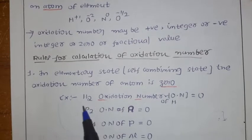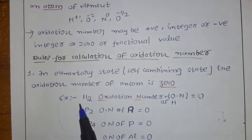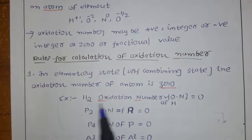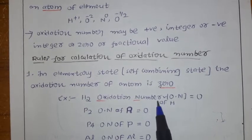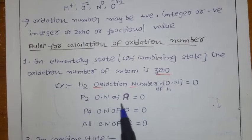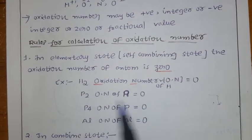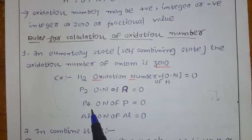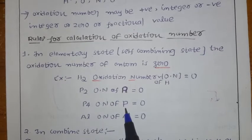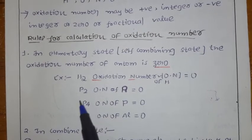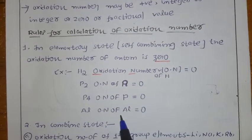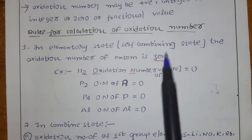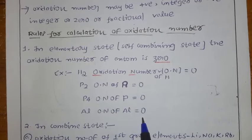Here we have H2: hydrogen atoms combine to give H2, which is a self-combining state. The oxidation number of hydrogen in H2 is 0. For P2, oxidation number of phosphorus is 0. For P4, the oxidation number of phosphorus is also 0, because we have similar phosphorus atoms only. For aluminium in elementary state, oxidation number is 0. In self-combining state, oxidation number is 0. This is the first rule.